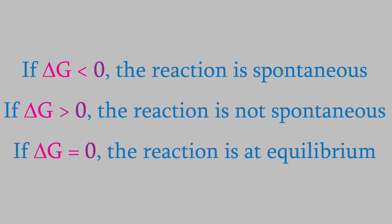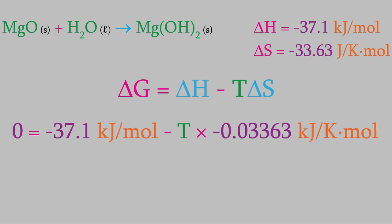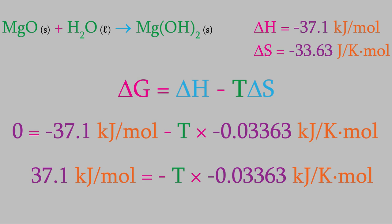Well, the reaction is spontaneous when delta G is negative and not spontaneous when it's positive. So the reaction makes the switch when delta G is zero. That gives us a way to find the temperature where this happens. All we need to do is set delta G equal to zero, plug in our values for delta H and delta S, and solve for the temperature. Let's try it. We'll move the 37.7 kilojoules per mole to the left side of the equation. And then divide by 0.03363 kilojoules per Kelvin mole. When we do that, we find out that T is 1,121 Kelvin, or 848 degrees C.